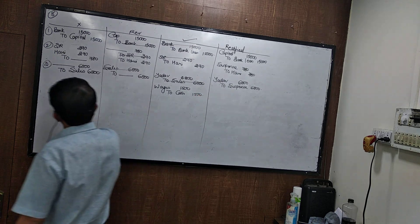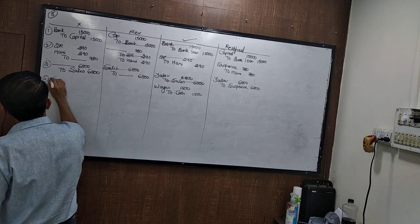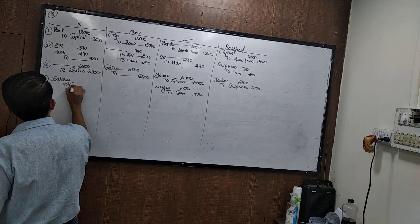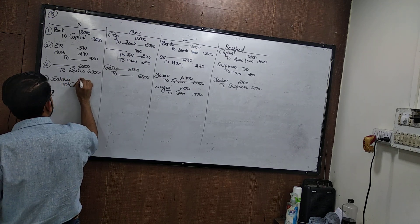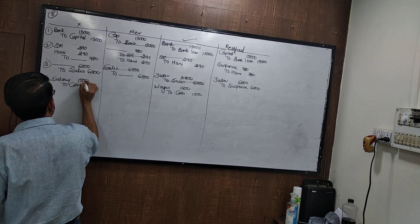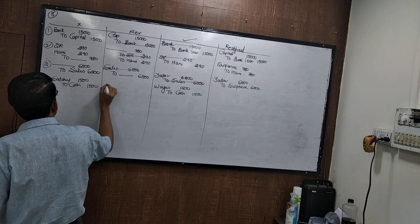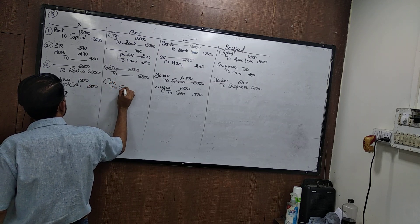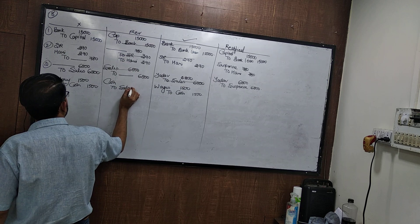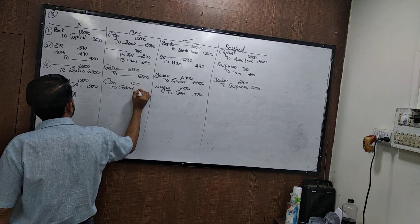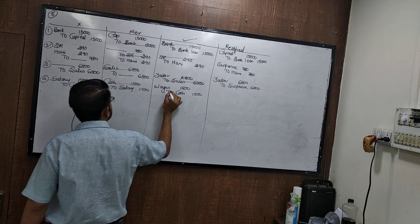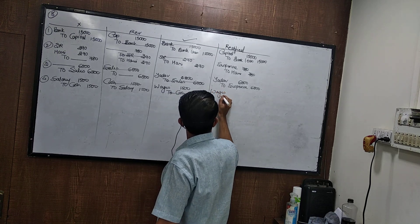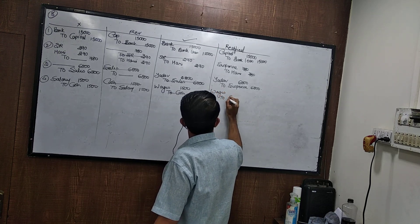Advertisement expense of 9100 paid to Pratishti Ad Limited was debited to Pratishti Ad. The correct entry for paying advertisement is advertisement to cash. Wrong entry: Pratishti to cash. Reverse is cash to Pratishti, and rectified is advertising to Pratishti. Both were errors of principle.